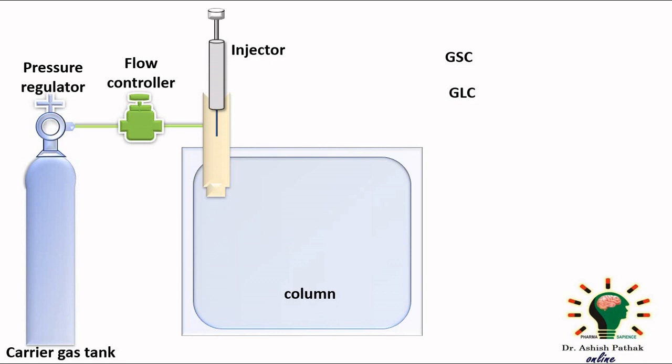But now to prevent bleeding, means removal of stationary phase by mobile phase, the same thing we have already discussed in HPLC where we have called it stripping. To prevent this, bonded phase chromatography is used.